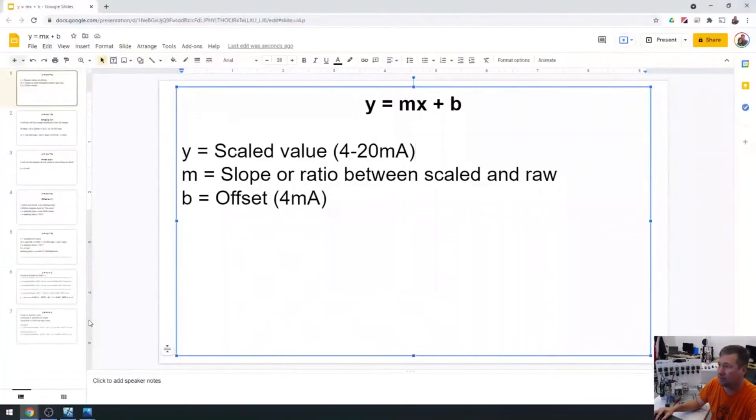And then we're going to have an offset. And the offset's really important on 4 to 20 because it's by far the most confusing thing when it comes to scaling things. We have what's called a live zero. And what that means is zero is not our zero. Four is our zero. So we have to account for that.